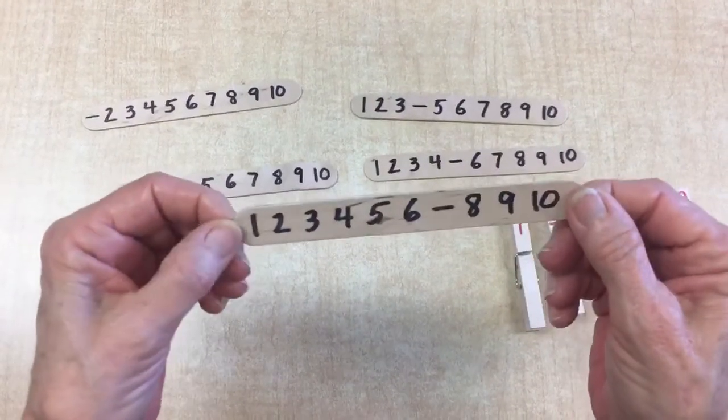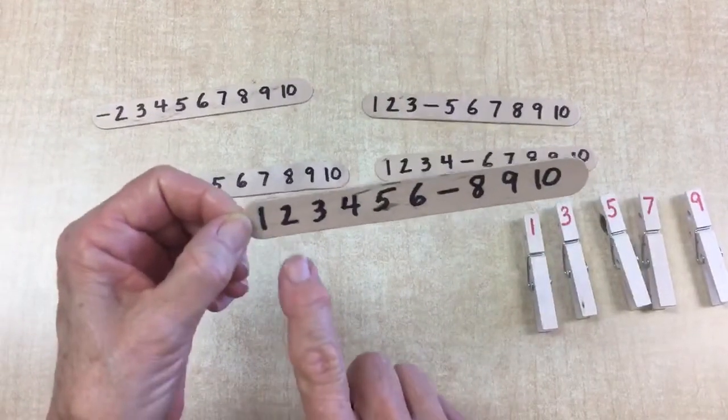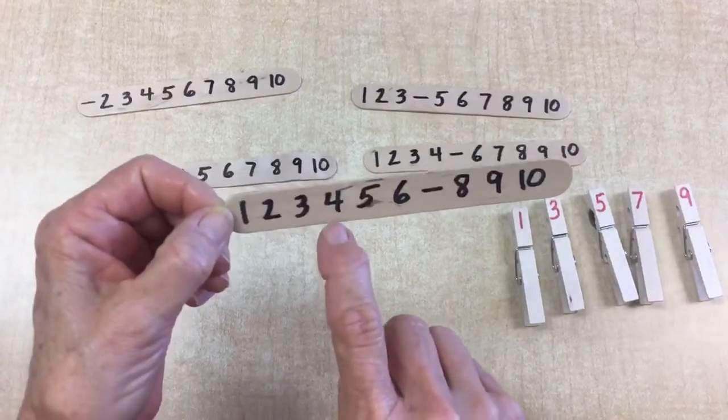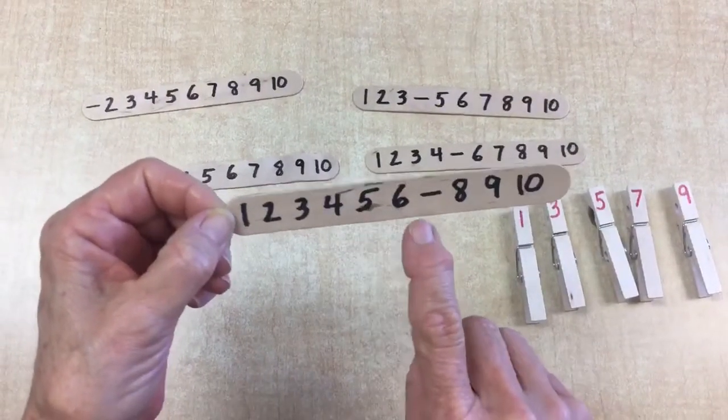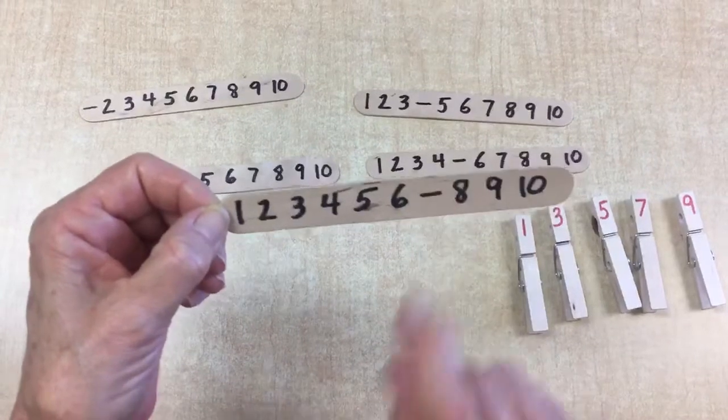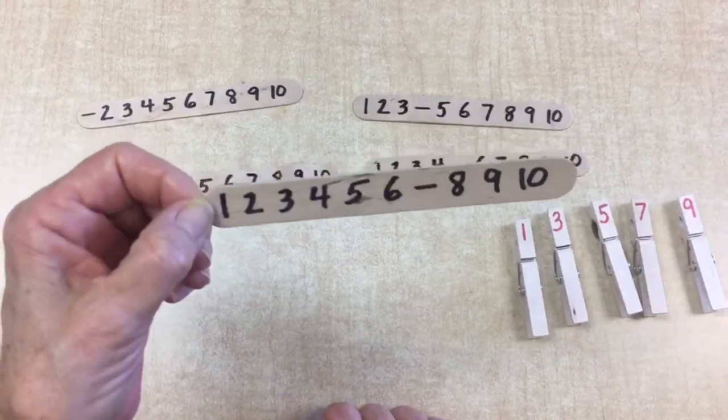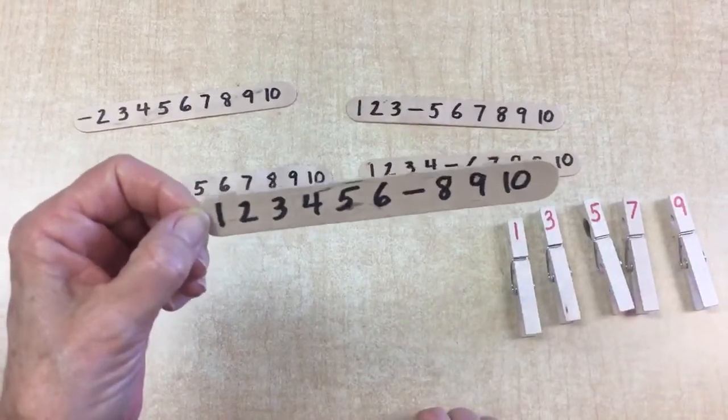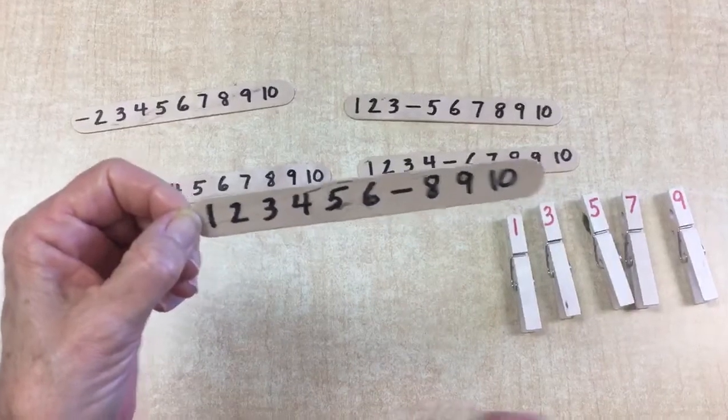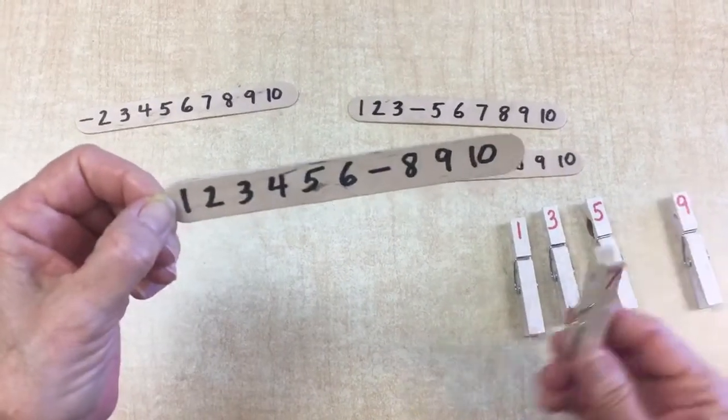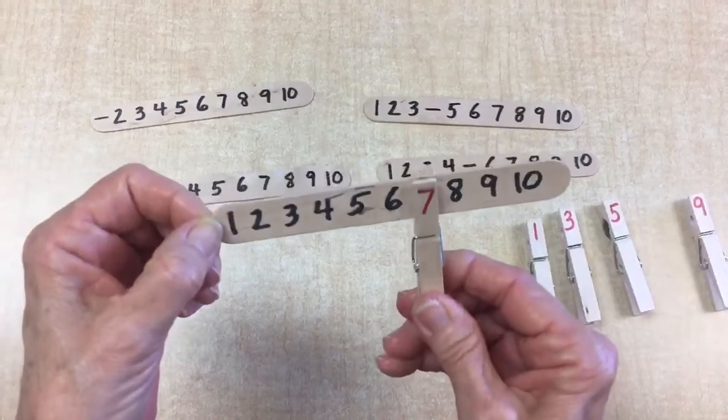1, 2, 3, 4, 5, 6... 7 is missing on this side. Do I have 7 down here? I think I do. There it is. Number 7 and you clip it right on there.